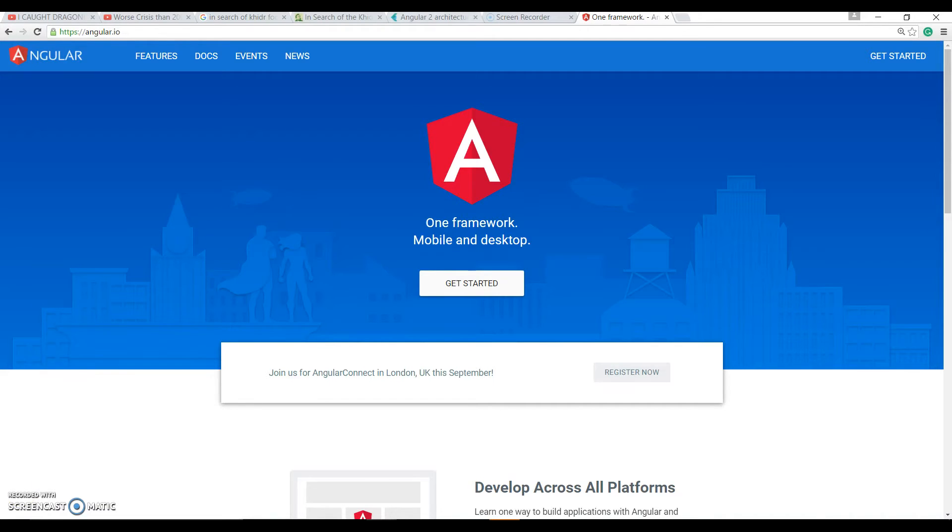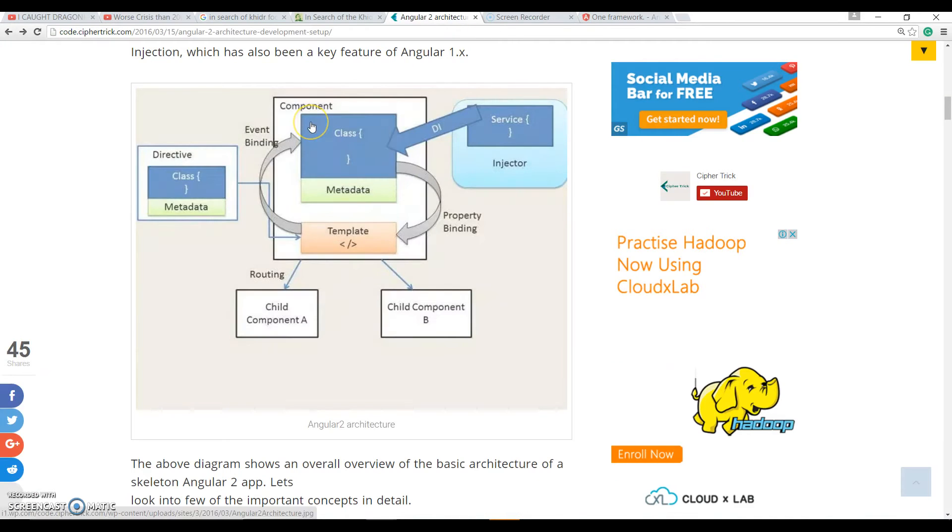Let's quickly hop over to the architectural diagram that I have done. What you can see here is a big block that is a component, and then you have a service that is injected by dependency injection, and you have a directive used in a template and some child components.